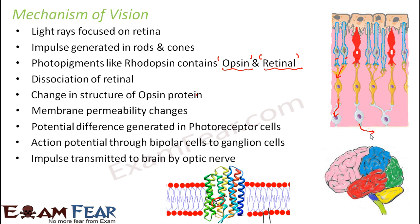From there, the impulse travels through the optic nerve and finally reaches the brain — specifically the optic lobe, the region of the brain specialized for the perception of vision.